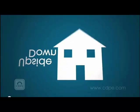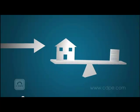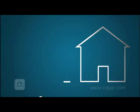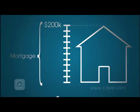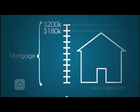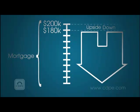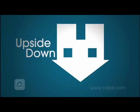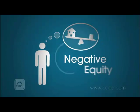A mortgage that is upside down refers to owing more on your property than what it is currently worth. For example, if you owe $200,000 on your home and the property today is only worth $180,000, you are upside down on your mortgage by $20,000. Being upside down is also commonly referred to as having negative equity or being underwater. For more information, visit www.fema.org.